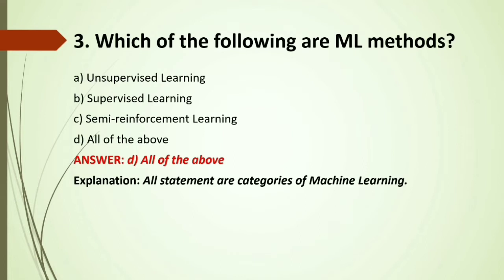MCQ: Which of the following are ML methods? Options: A) Unsupervised learning; B) Supervised learning; C) Semi-reinforcement learning; D) All of the above. ML methods are classified depending on the nature of learning: unsupervised, supervised, and reinforcement. Semi-reinforcement learning also exists. Answer: All of the above.